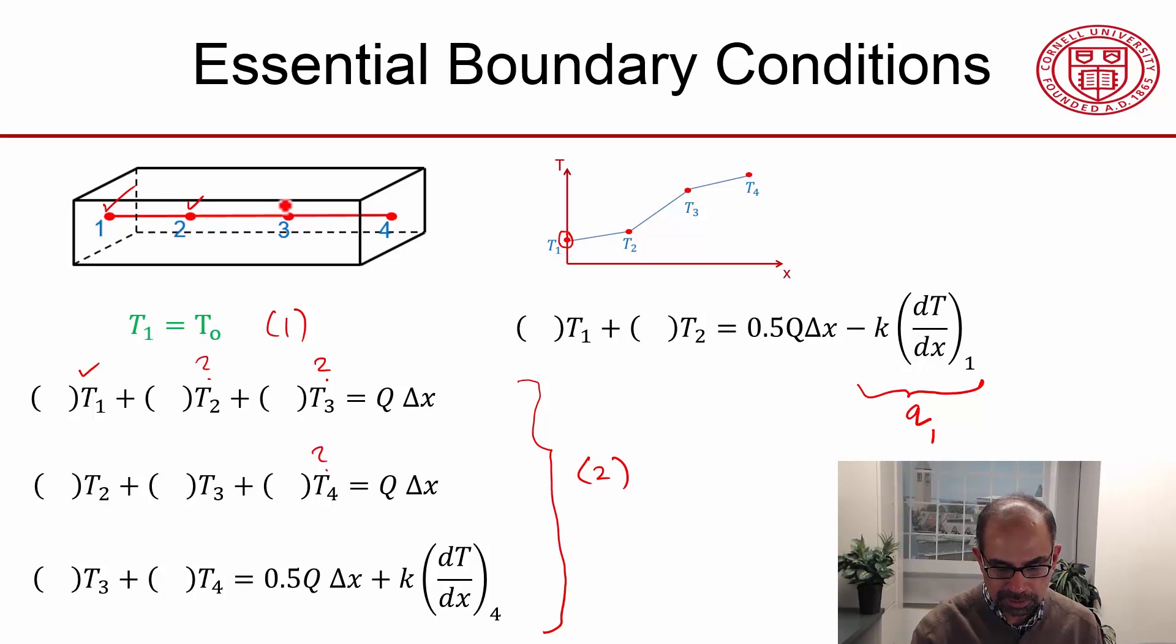After stage two, I know all my nodal temperatures. All the nodal temperatures have been determined, and I basically know my temperature distribution. Then what do I do with this equation here?